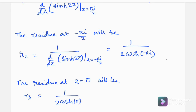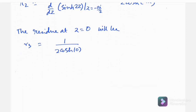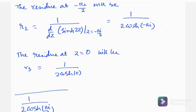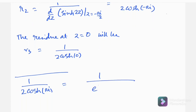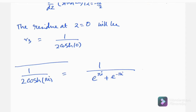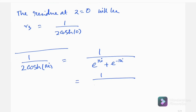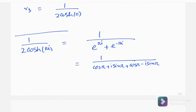Now evaluating: 1/(2·cosh(πi)) = 1/(e^(πi) + e^(−πi)) = 1/(cos π + i·sin π + cos π − i·sin π) = 1/(2·cos π) = 1/(−2) = −1/2. Similarly, 1/(2·cosh(−πi)) also equals −1/2.